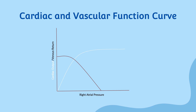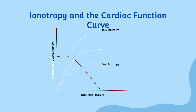When we plot cardiac output and venous return on the y-axis and right atrial pressure on the x-axis, we get a cardiac function curve. This curve shows how changes in right atrial pressure affect cardiac output and venous return. The cardiac function curve is primarily affected by changes in inotropy.